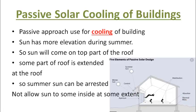Now we will discuss from the point of view of design. We will talk about passive solar cooling of buildings and the geographical advantages given by nature. We will use them to make our buildings green. There are two types of approach — one is the active approach and one is the passive approach. Today we will discuss the passive approach for solar cooling of buildings.